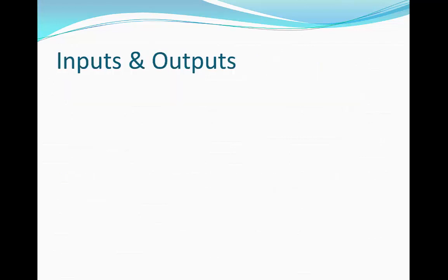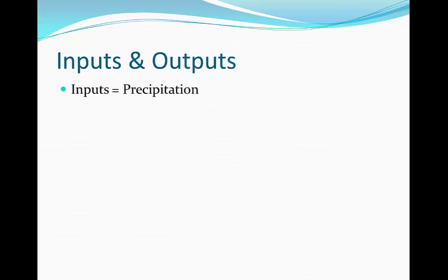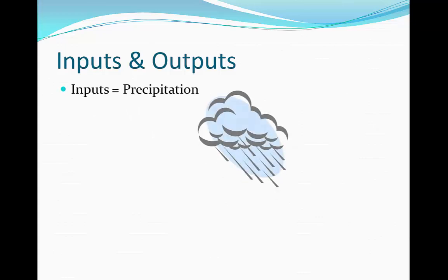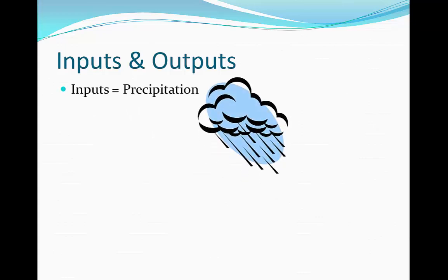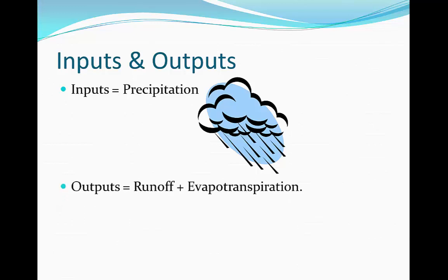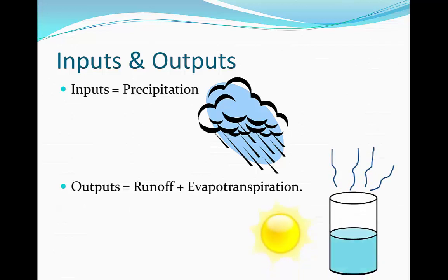Inputs and outputs. The first input is known as precipitation, and this is when the rain or snow falls into the drainage basin and is collected into the river. The outputs are runoff and evapotranspiration, and this is when the water exits the drainage basin.